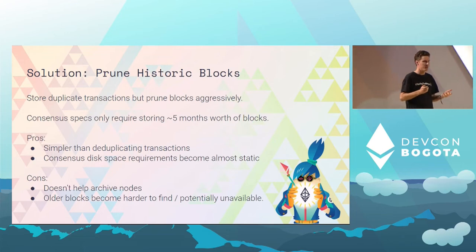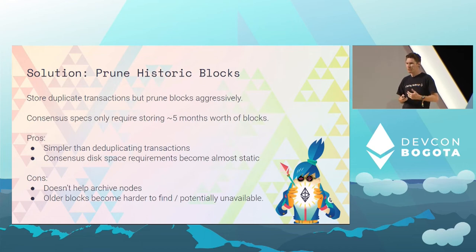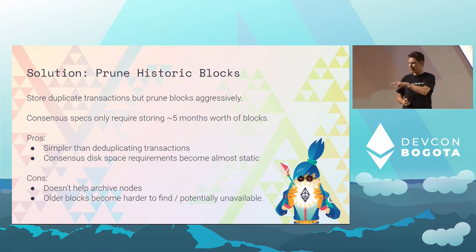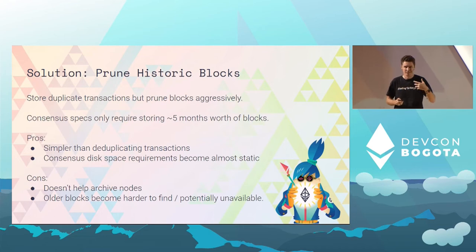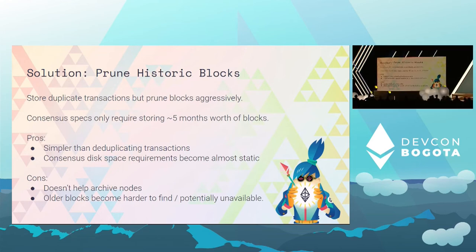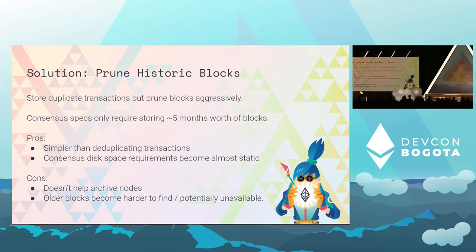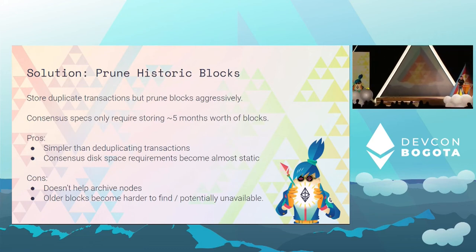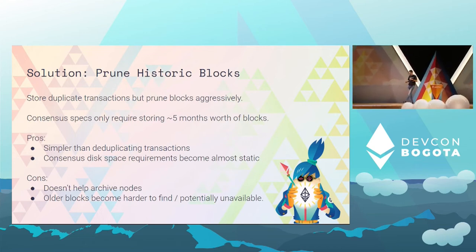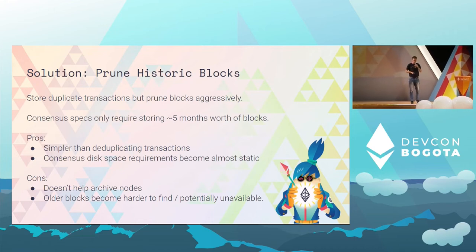The drawback is obviously if you're running an archive node, you want to store all the blocks, and you're really going to want to lean on the deduplication to save disk space. The other part, which things like the portal network are aiming to solve, is that those older blocks are harder to find — you can't just request them from any peer on the network and they potentially become unavailable. It's technically okay, but it doesn't feel good for a blockchain to lose old data. So it's not something we want to encourage, and we want systems in place to hold onto them. For example, era files are defined and we can use a number of things like that.